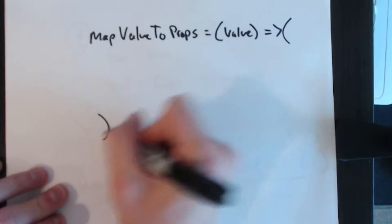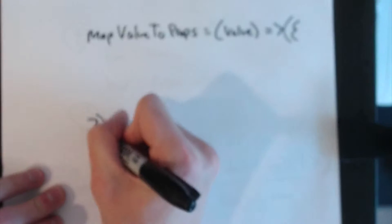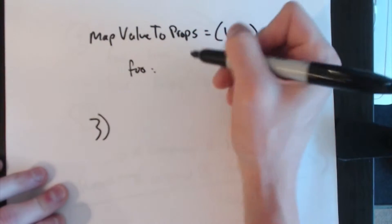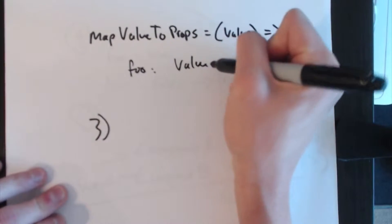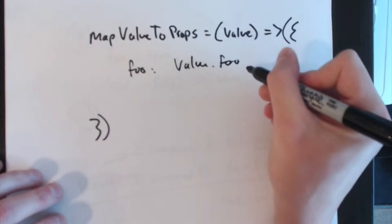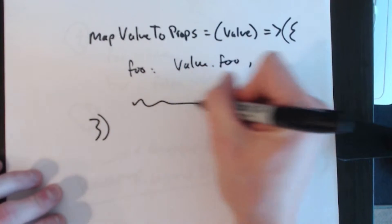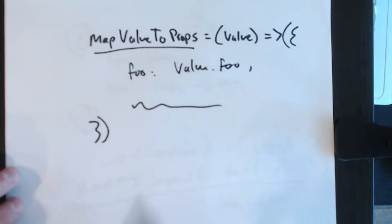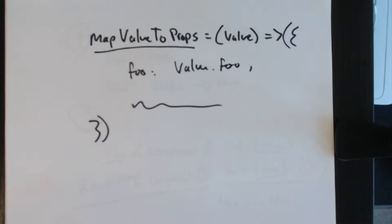That we're going to spread into the props of our component. So this object represents the props that our component A and component B would actually consume from the context. Here I want to consume foo—I want a prop called foo and it's going to come from the context value.foo. Then you could select whatever other properties you want from the context value. So we're just going to slice off the subset of the context value that we actually need for each component, and each component would create a mapValueToProps function just like you would in Redux with mapStateToProps.